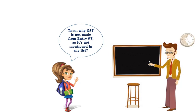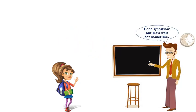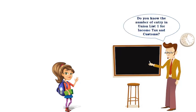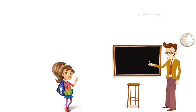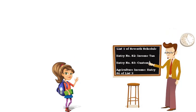Then why is GST not made from entry 97, as it's not mentioned in any list? Good question, but let's wait for some time. Do you know the number of the entry in Union List 1 for Income Tax and Customs? No sir. Please note, in List 1, entry number 82 gives power to Parliament to make any law on income tax, and entry number 83 gives power to Parliament to make any law on customs. Also note, in List 2, entry number 46 gives states the power to make any law on agriculture income. That's bonus information for you.